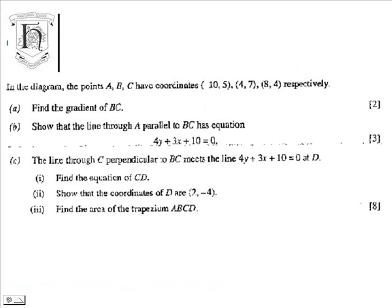We are asked to find the gradient of BC, show that the line through A parallel to BC has the equation which is given, and show the line through C perpendicular to BC meets the line given at a point called D. So we are asked to find the equation of CD, the coordinates of point D, and the area of the trapezium which results.